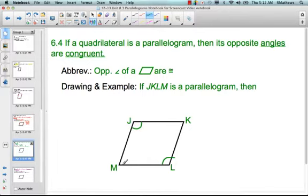So opposite angles, right? Opposite from each other, so K and M are opposite, and J and L are opposite. And then how we would write that with our angle signs is we would say angle J is congruent to angle L, and that angle K is congruent to angle M.